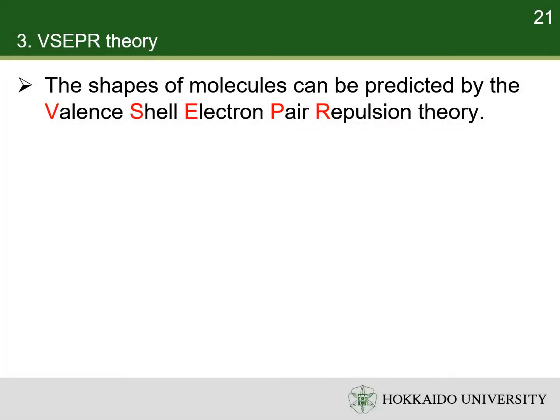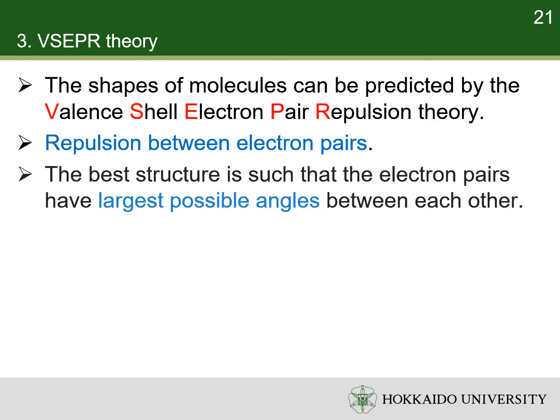The shapes of molecules can be predicted by the valence shell electron pair repulsion theory, or VSEPR for short. In the VSEPR theory, there is repulsion between electron pairs. Thus, the best structure is the one with the largest possible angles between electron pairs.